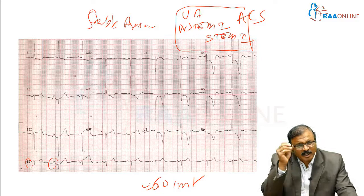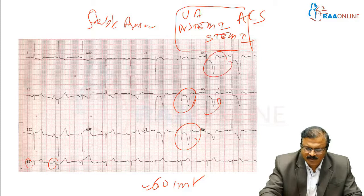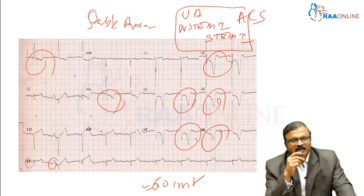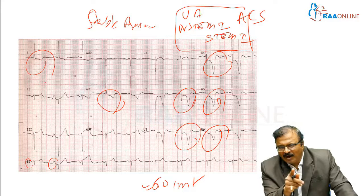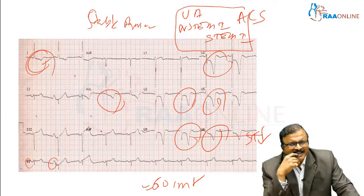Then look for P wave abnormality, QRS abnormality, and the ST segment. Here, what is abnormal is the ST segment — especially in V1, V2, V3, V4, V5, V6. You can also see AVL is affected. Classically, there is ST segment depression visible in these leads, which is not seen in lead 1.